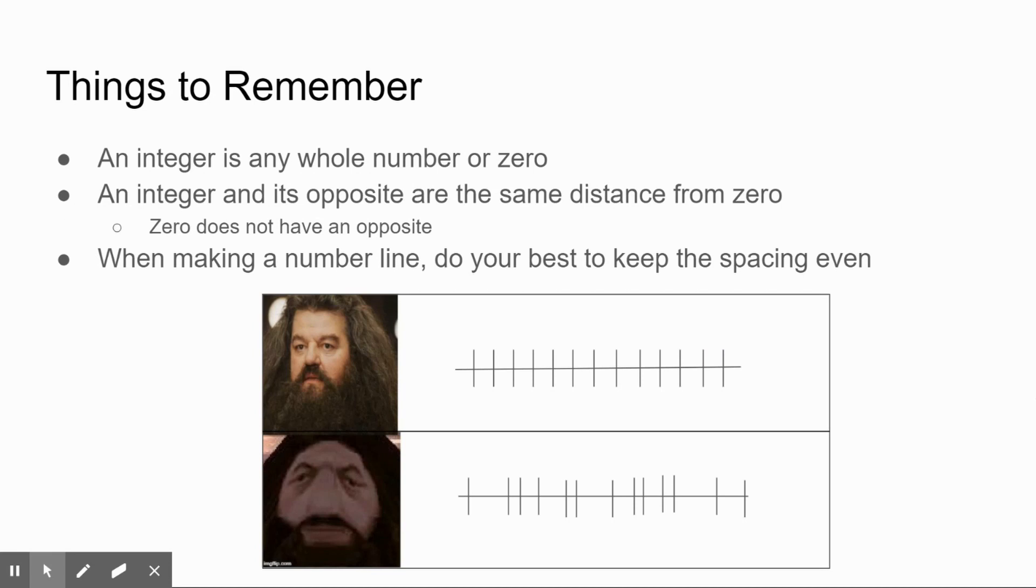A few things to remember: an integer is any whole number - positive, negative, or zero. An integer and its opposite are always the same distance from zero. That means zero does not have an opposite.